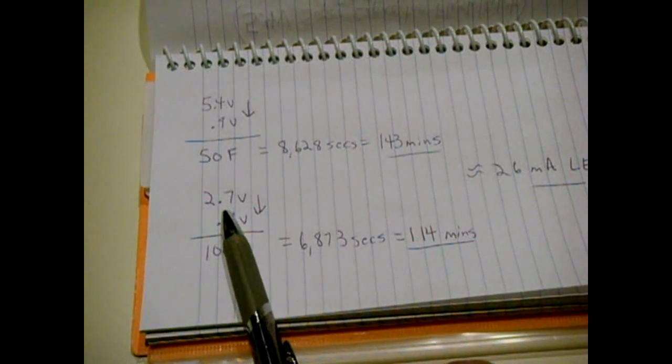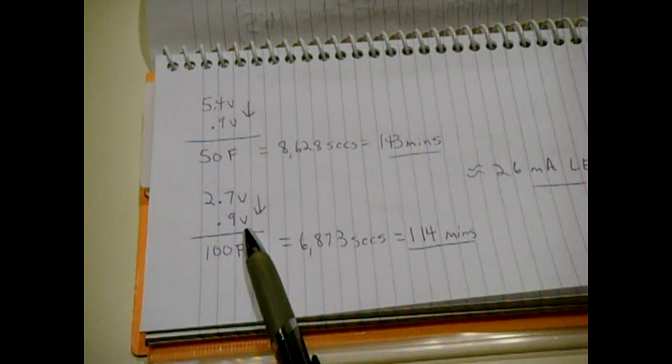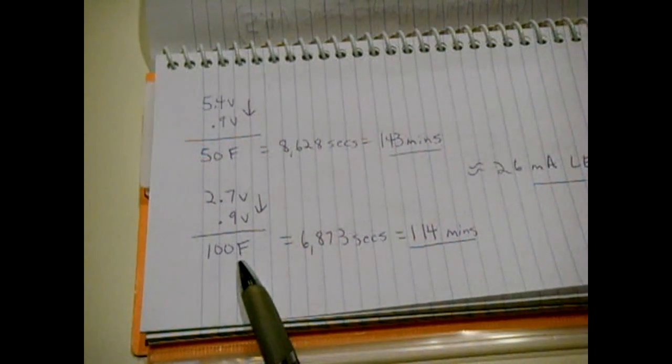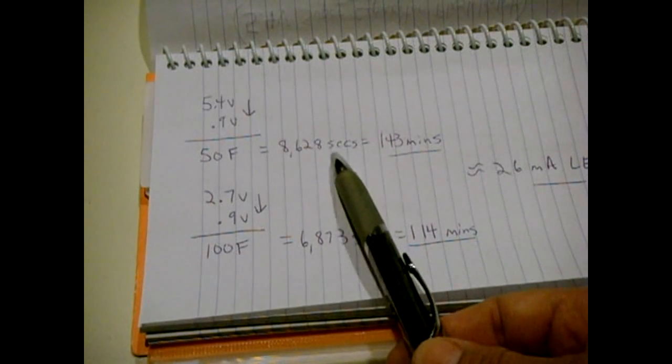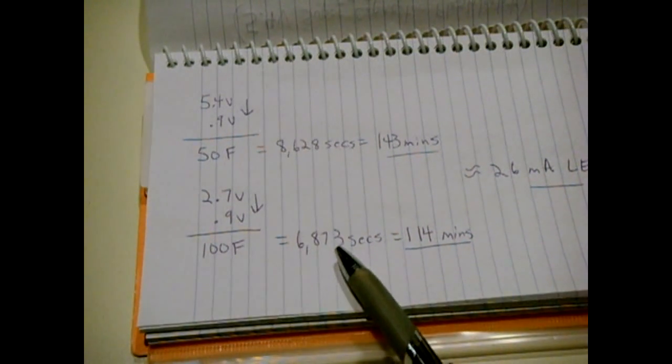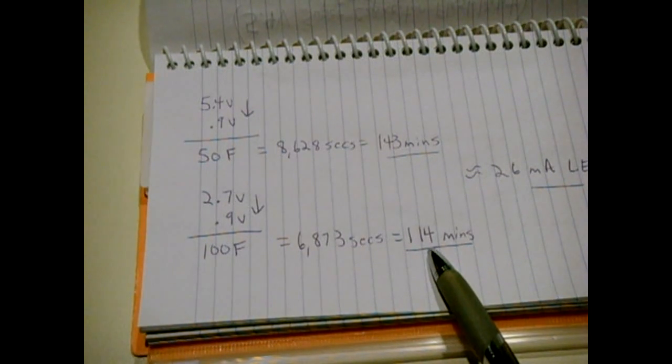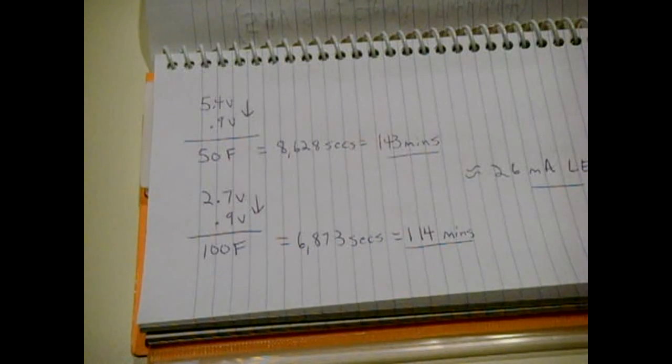Now, if you use a 2.7V, only one supercapacitor and that drains down to 0.9 volts using 100 farads, you'll get around three quarters of this output, maybe a little more, 6,873 seconds or 115 minutes almost. And that's pretty good.